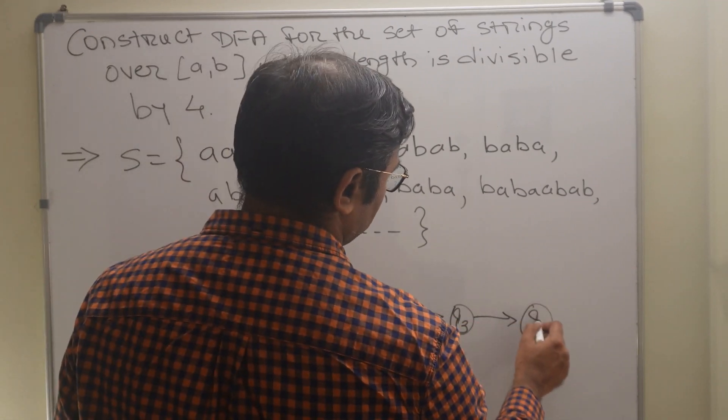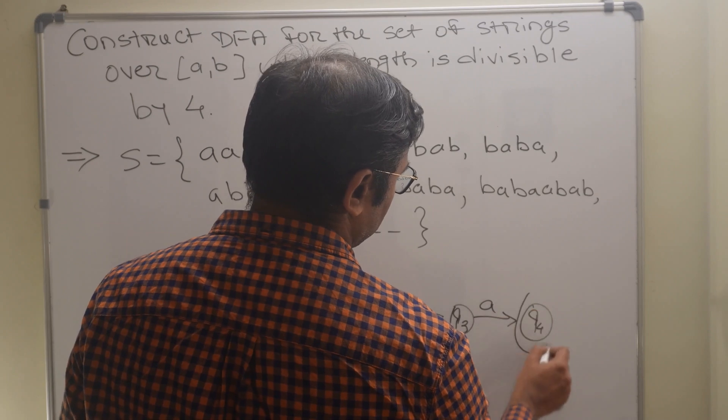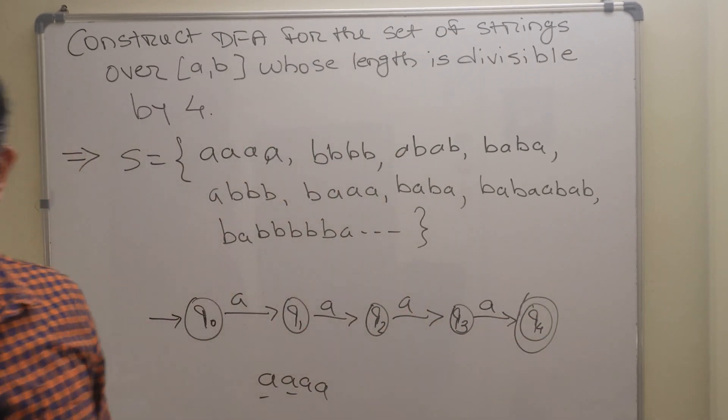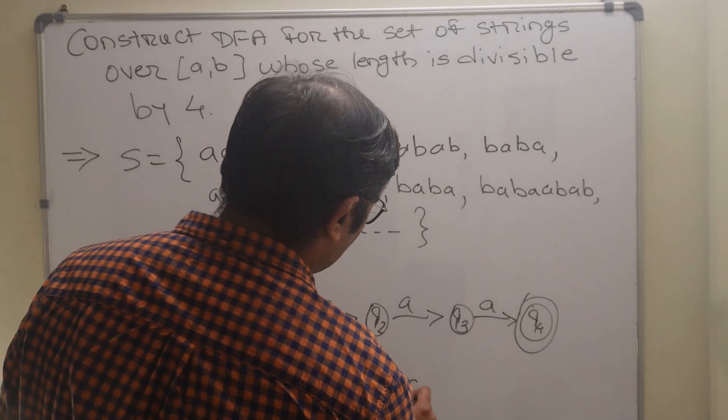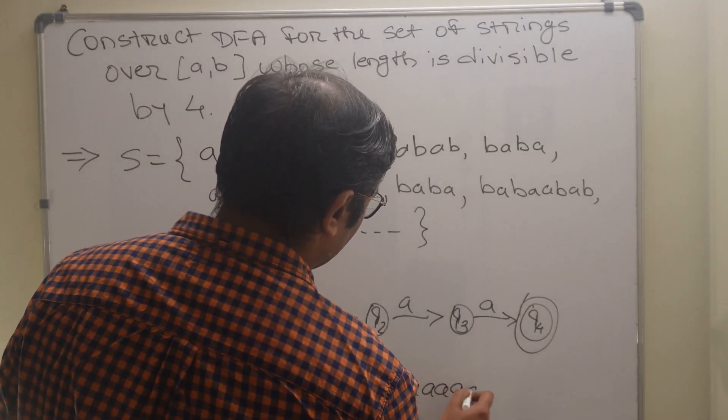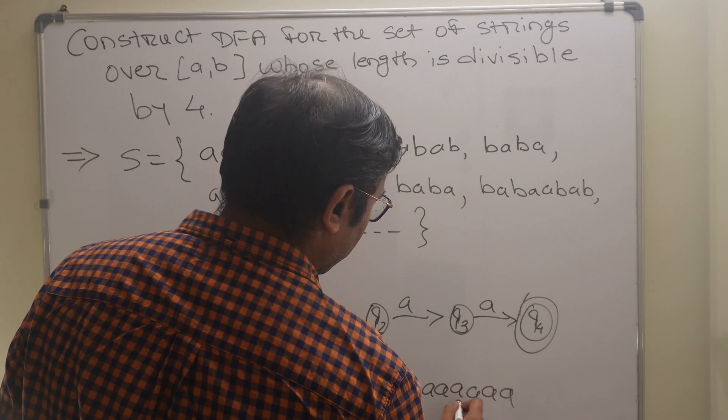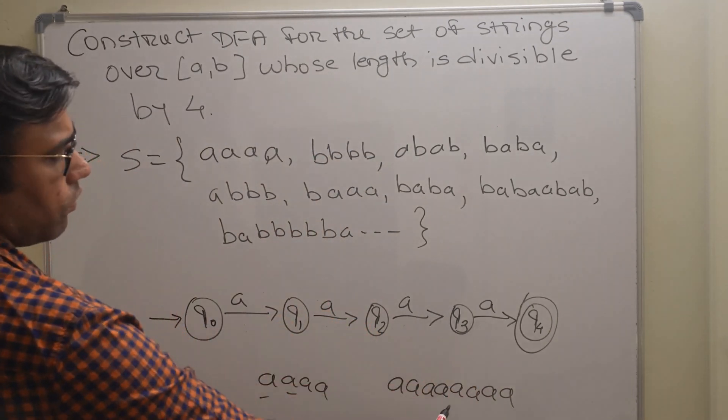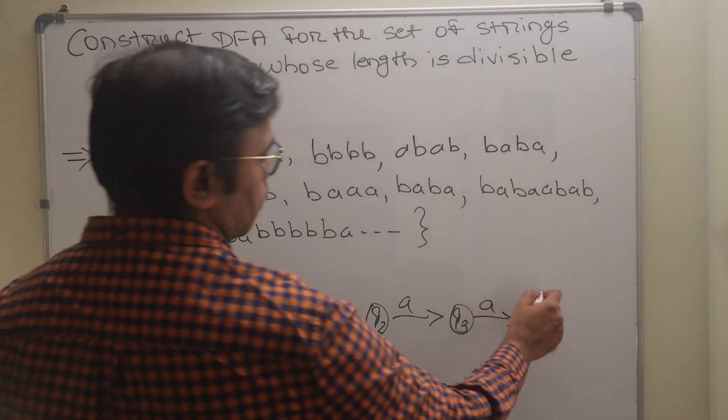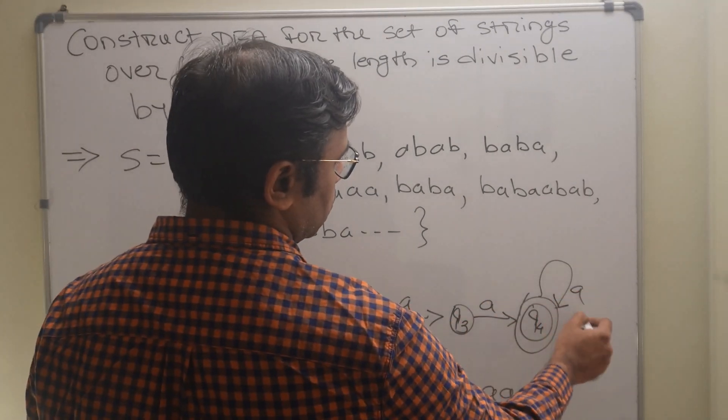Then there is q4. If you take q4 as final state, let us see what is the problem. The problem is if you take eight times a, eight times a is also valid. So what will happen? One, two, three, four, what about this five, six, seven, eight? If you apply loop of a then it becomes invalid because it will accept any number of a which is not permitted.